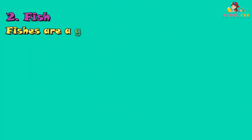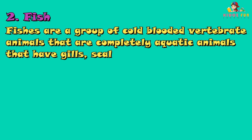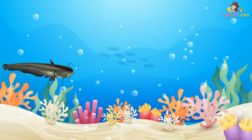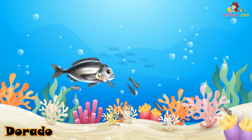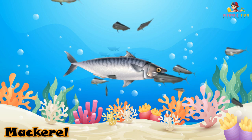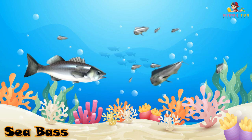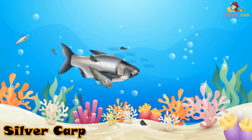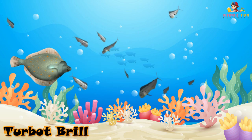Fish are a group of cold-blooded vertebrate animals that are completely aquatic. They have gills, scales, and swim bladders to float, and most produce eggs. Some examples are catfish, dorado, mackerel, rockfish, sea bass, silver carp, tuna, and turbot.